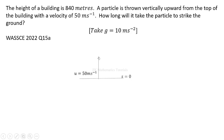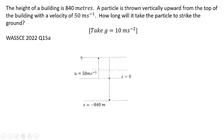We throw the particle vertically upward with an initial velocity of 50 meters per second. It reaches maximum height, then returns to hit the ground. When the particle is at the top of the building, displacement is zero. When it hits the ground, displacement is negative 840 meters, because upward movement is taken as positive and downward movement as negative.